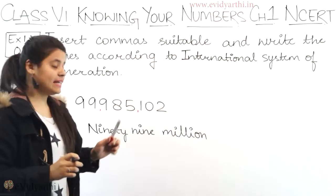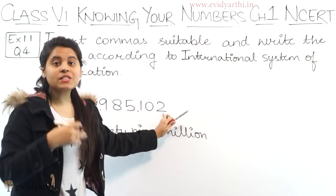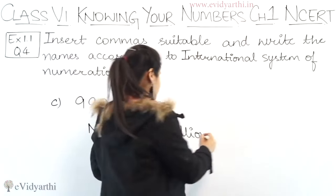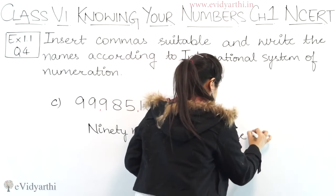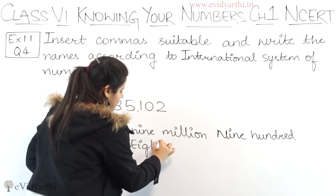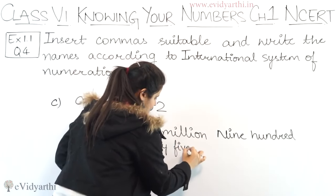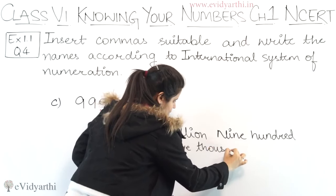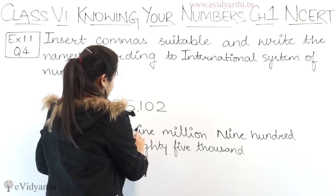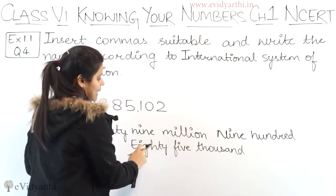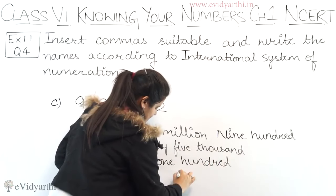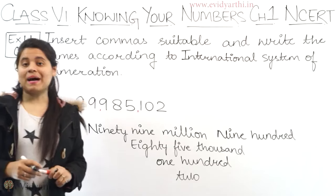Next, we have 985. After 985, there are 3 more digits, which means this will be 985 thousand. Then we have 102 at the end. So the full number is 99,985,102. That was part C.